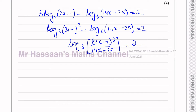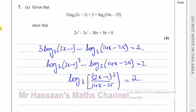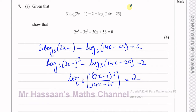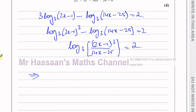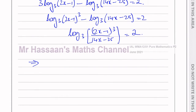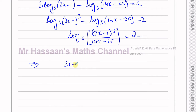Now I'm ready to get rid of the log term. We should know that if a^b = c, you can rewrite that as log_a(c) = b. This is the base, this is the power, this is the result. Applying that here: 3² equals all of this inside. So (2x − 1)³ / (14x − 25) = 9.